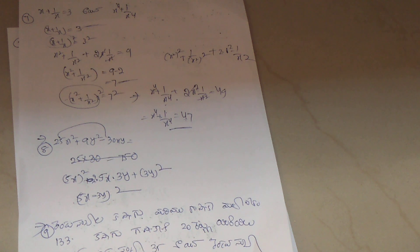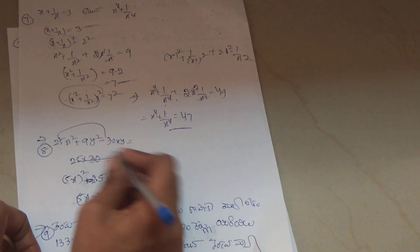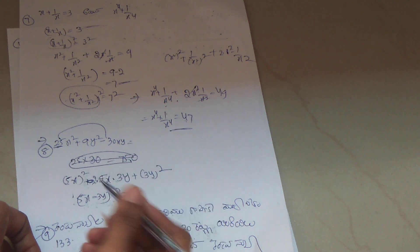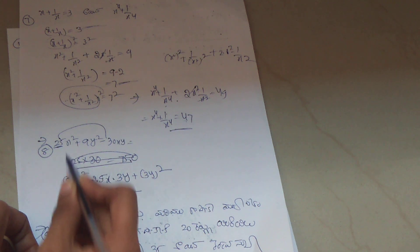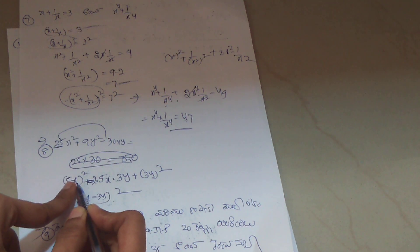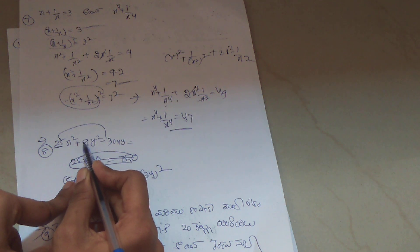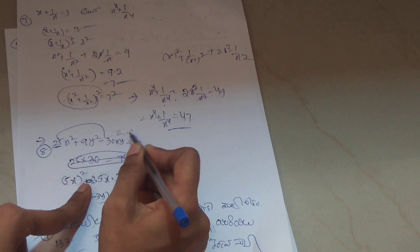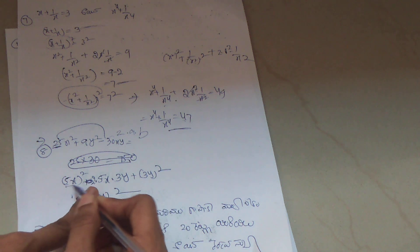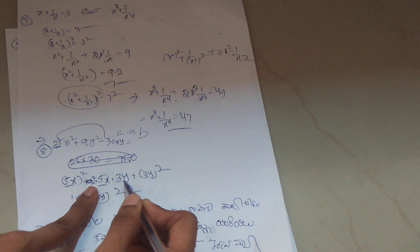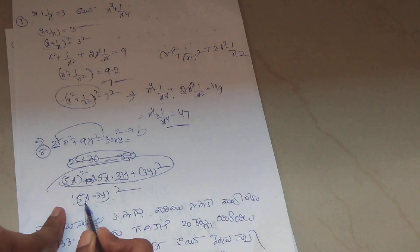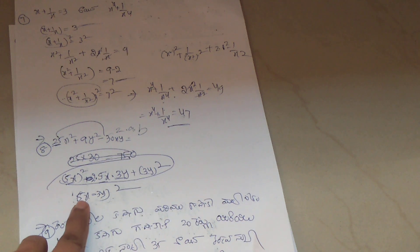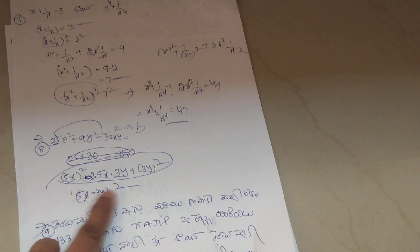25x square plus 9y square minus 30xy. This is 5x whole square plus 3y whole square. This 30 will change to 2ab. So a is 5x, b is 3y. This is 5x minus 3y whole square. Using a minus b whole square formula: a square minus 2ab plus b square.